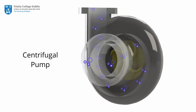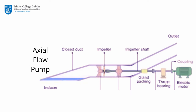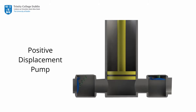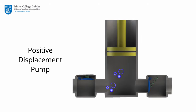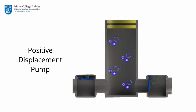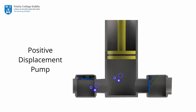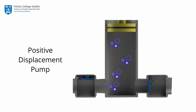In centrifugal pumps, the direction of flow of fluid changes by 90 degrees as it flows over an impeller. In axial flow pumps, the direction of flow is unchanged. A positive displacement pump moves a fluid by repeatedly enclosing a fixed volume and moving it mechanically through the system.